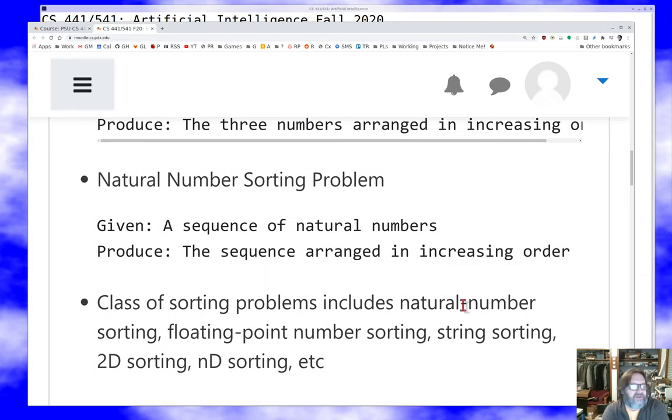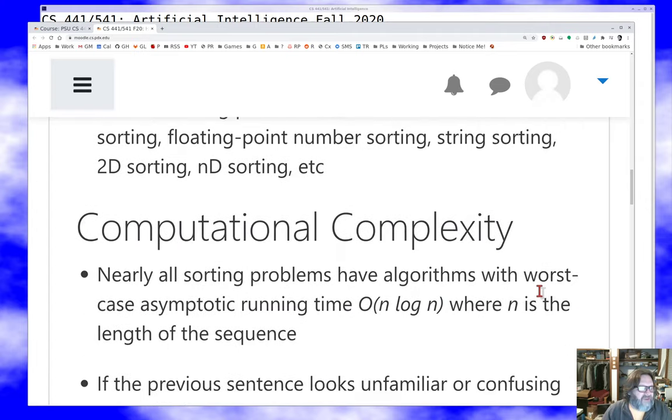And an algorithm is a way to mechanically produce the sorted sequence from the unsorted sequence. I'll try to be really careful throughout the course with problem and instance, but it's a thing that you do have to be a little careful about. So we've got an instance, we've got a problem, what's a class? Well, classes are a collection of problems. So the class of sorting problems includes all kinds of interesting stuff: natural number sorting, floating point number sorting, string sorting, 2D sorting, 3D sorting, ND sorting.